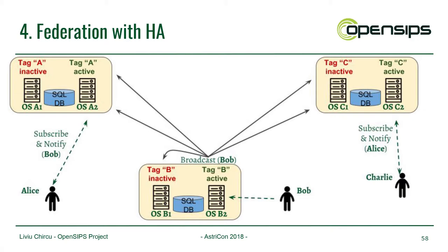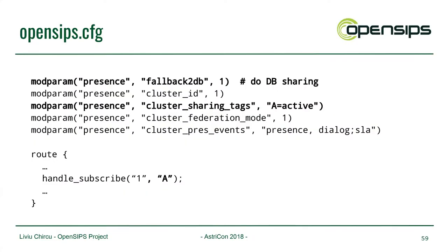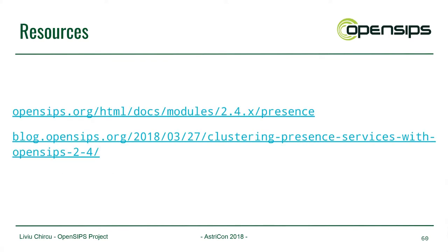You can also add high availability into it by using pairs of servers in each data center, coupled with the sharing tags mechanism. The extensions to the handle_subscribe function just require you to provide a tag and that's pretty much it. There's a lot more info on this in a good blog post and in the presence module documentation.